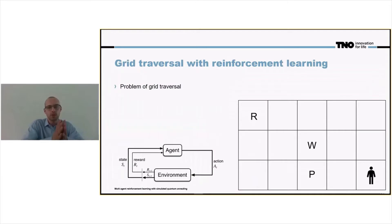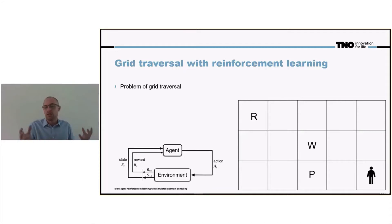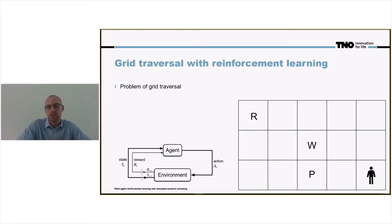So the problem: suppose you have a grid and we have a reward, in this case indicated by the R. You have a wall, which can for instance be a building or an impassable blockade, and we have a penalty indicated by the P.